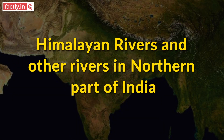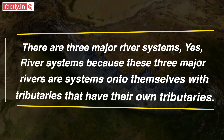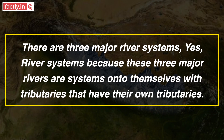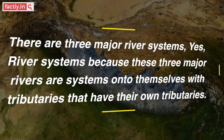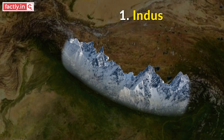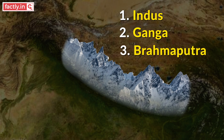The Himalayan rivers, as the name indicates, have their source in the Himalayas. There are three major river systems — river systems because these three major rivers are systems unto themselves, with tributaries that have their own tributaries and so on. They are: Indus, Ganga or the Ganges, and Brahmaputra, which goes by different names that we will get into later. First, the Indus.